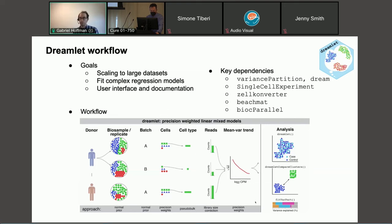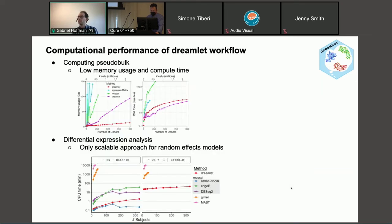Downstream analyses with Dreamlet include case-control analysis within a cell cluster, analyses across cell clusters, or variance partitioning analyses at the gene level. The computational scaling is especially important for datasets of this size.